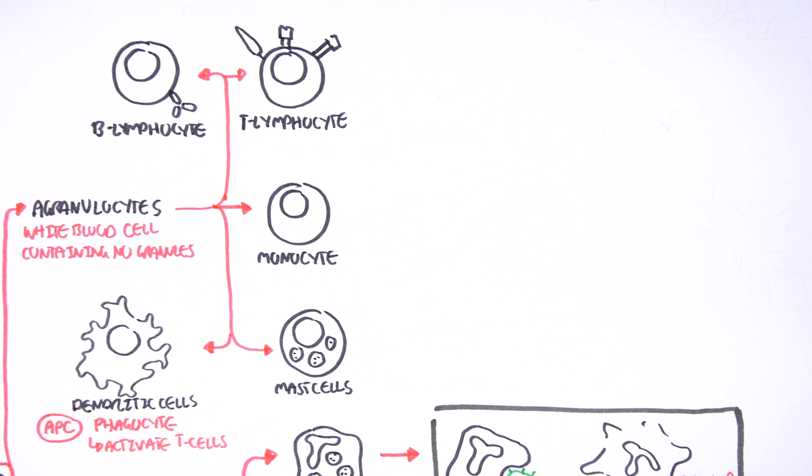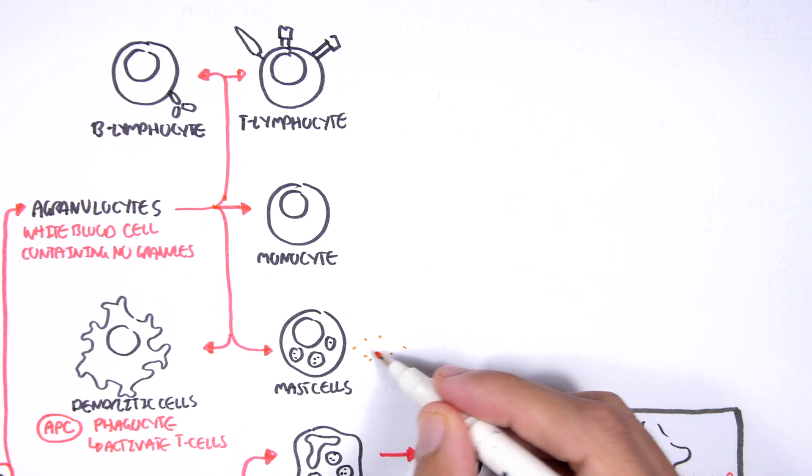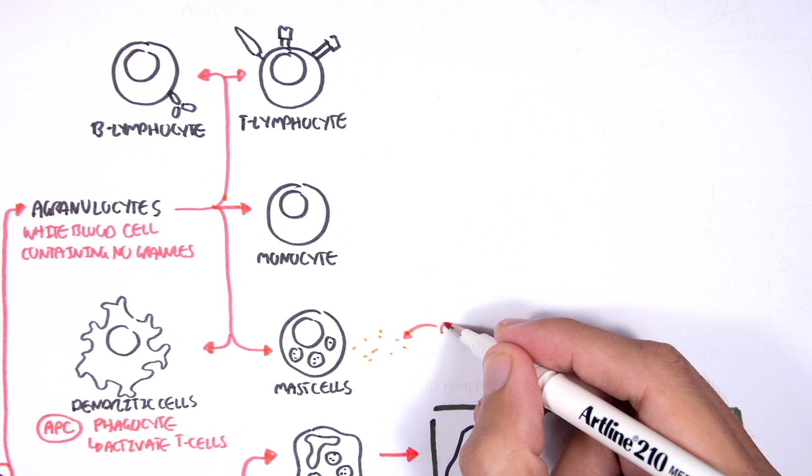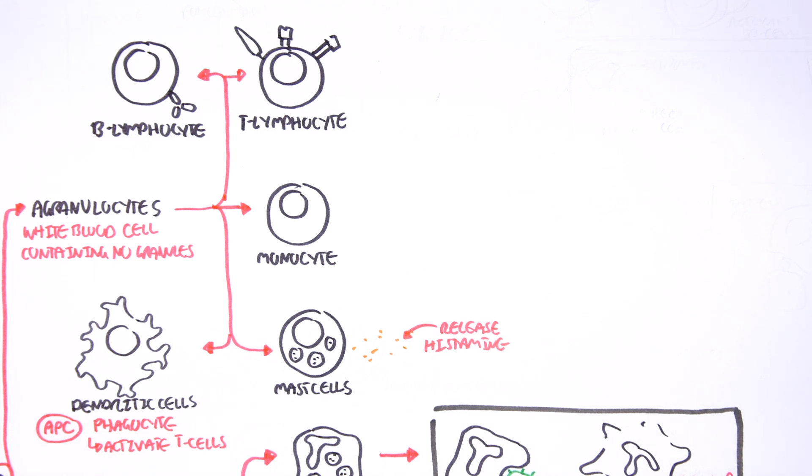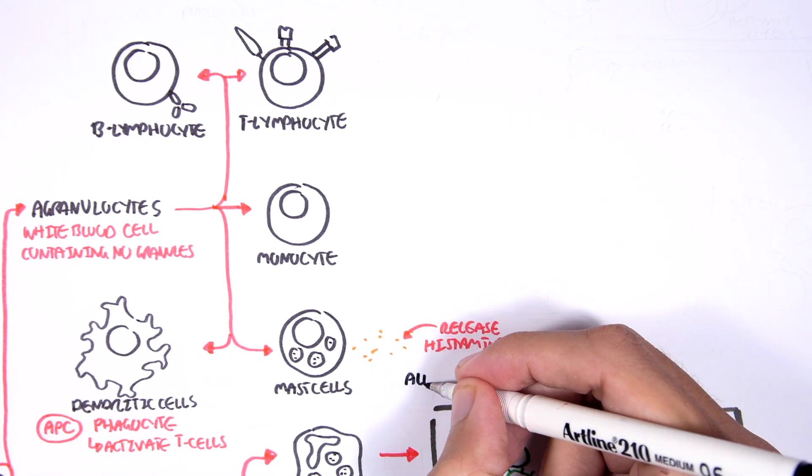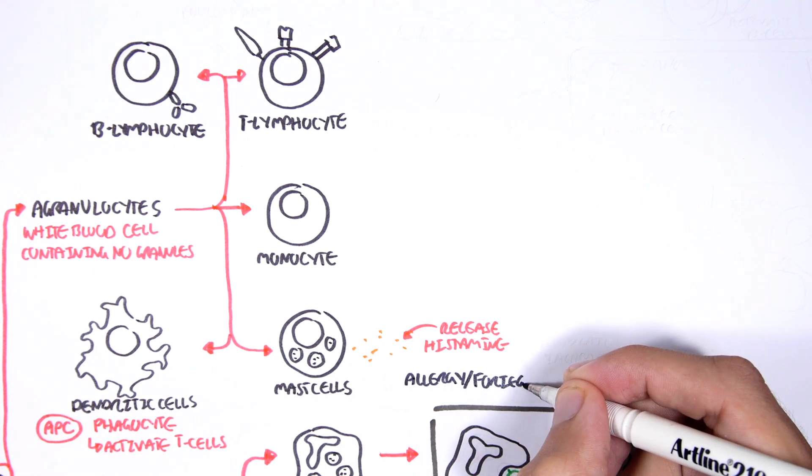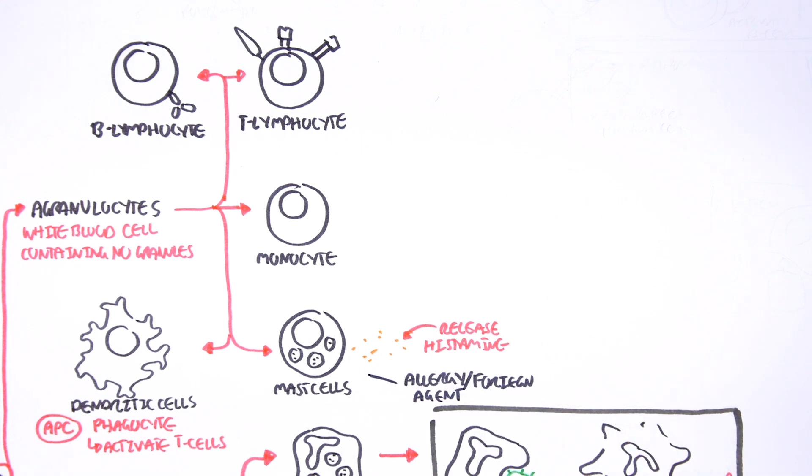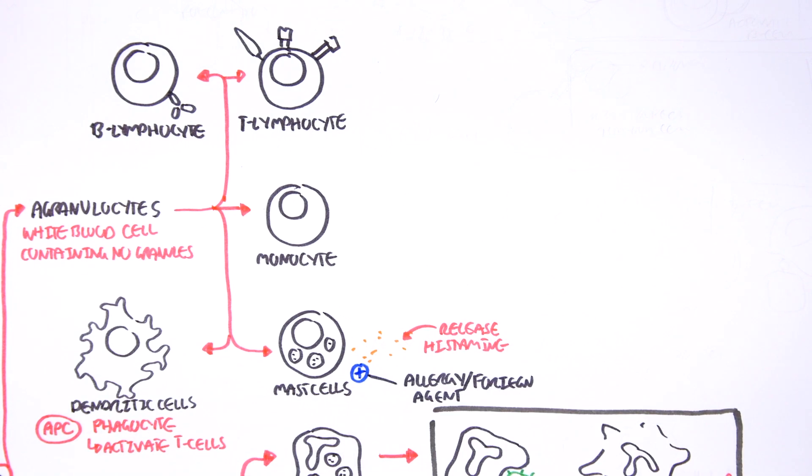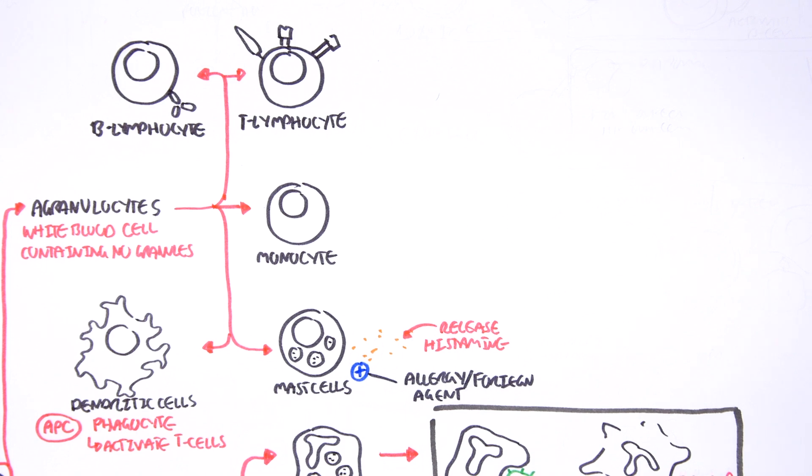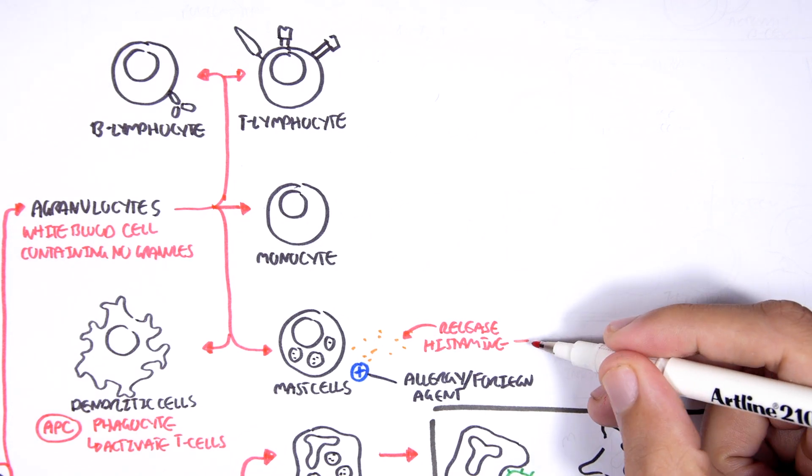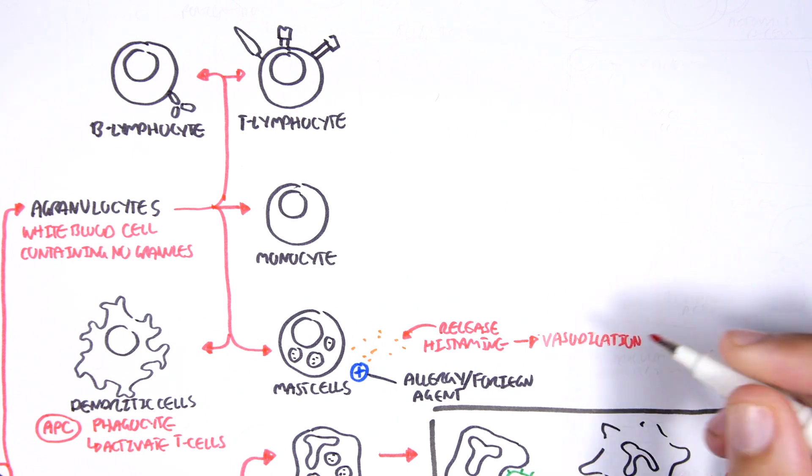Mast cells, they look like they contain granules, and they do, but they are not classified as granulocytes. Mast cells release histamine, and they are very big in the allergic response as well as the inflammatory response. And they release histamine if there is an allergy or in the presence of a pathogen. The release of histamine will cause vasodilation and increase in vascular permeability.